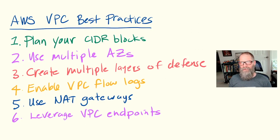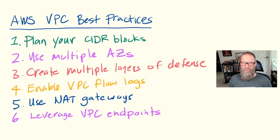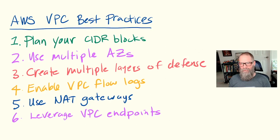Point number one is to make sure that you're properly planning out your network blocks, your CIDR blocks. First, make sure that the CIDR blocks you're using for your VPCs are large enough so that you don't run out of IP space at some point in the future. The second thing to keep in mind around your CIDR blocks is to make sure that they don't overlap. You don't want any network overlap if you are dealing with other AWS VPCs, or maybe networks that exist outside of AWS — maybe an on-prem environment or a co-location.